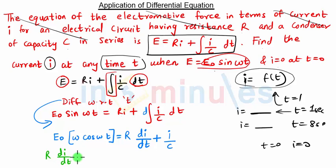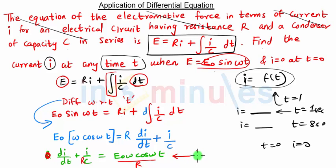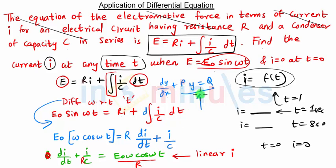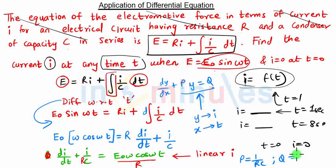This equation can be written as: dI/dt + I/(RC) = (E₀ω/R) cos(ωt). If we observe carefully, this is nothing but our standard linear differential equation dy/dx + P·y = Q, where P and Q are functions of x. Replacing y by I and x by T, we compare and get P = 1/(RC) and Q = (E₀ω/R) cos(ωt). We all know how to solve a linear equation.